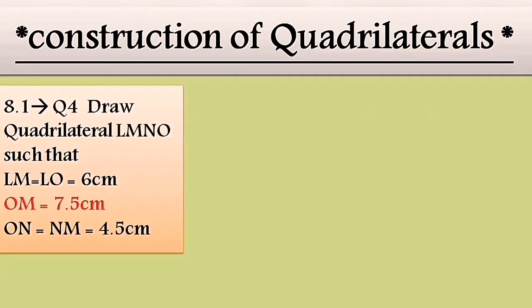Question number four: draw quadrilateral LMNO. The question is the same structure as before — one diagonal OM and four sides are given. To make it easier, we will be drawing OM first. From OM, I'm going to locate point L above the segment OM.